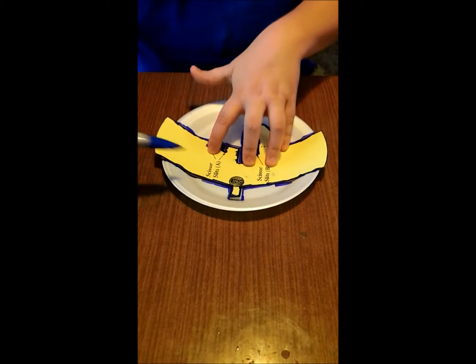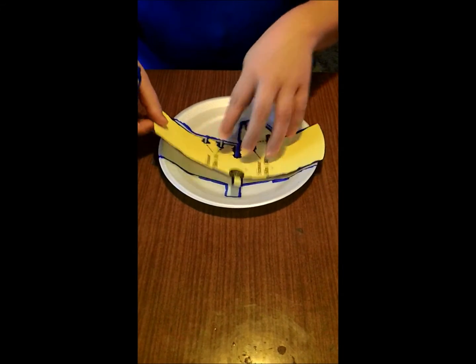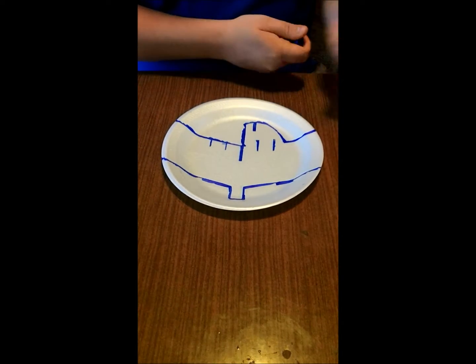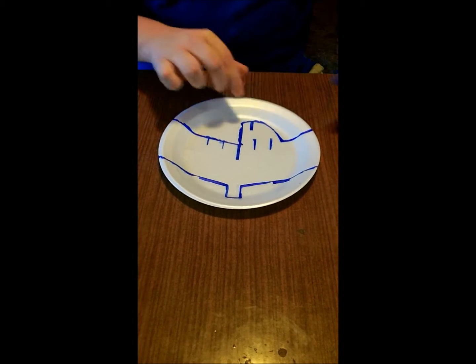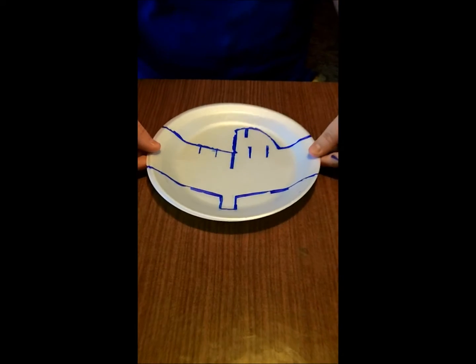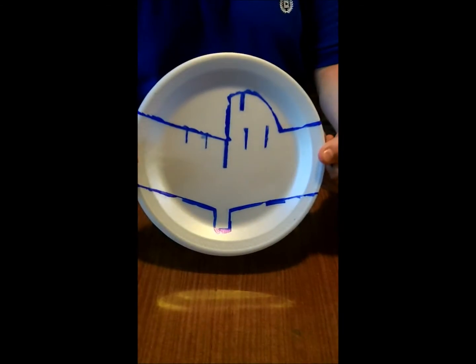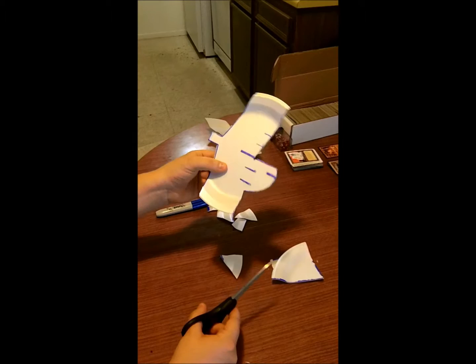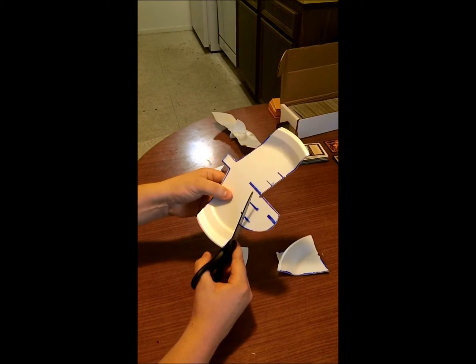So once you're done outlining the entire template, you take it off and you've got what you need to cut out of your plate, just like this. Now once you've cut out the template, make sure to cut straight across right there. That's where your rudder is gonna be.